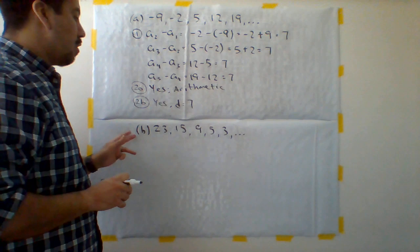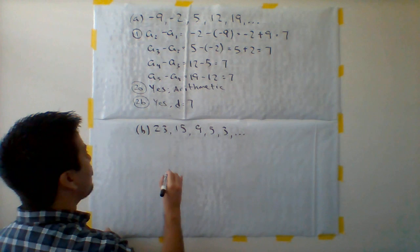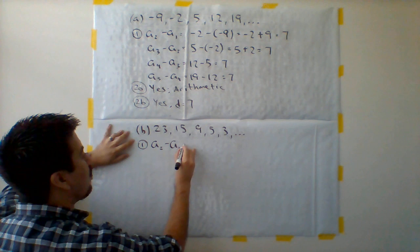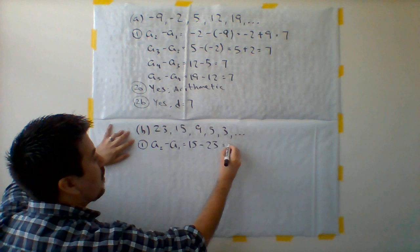Now we can go into part B with the next sequence that's on the same page. We have these following terms, 23, 15, 9, 5, and 3. We're going to do step 1 again by taking the difference between a later term and the previous term. So we're going to take 15, I'm going to subtract 23. I get here negative 8.